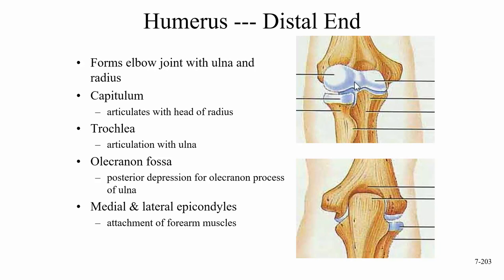These condyles have unique shapes and specific names. The round part is called the capitulum — 'capit' means head, like in 'decapitate.' The capitulum articulates with the head of the radius. The head of the radius is round, and we measure something round by its radius, which is how the radius bone got its name.